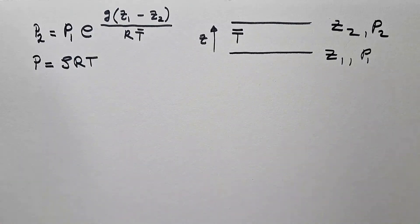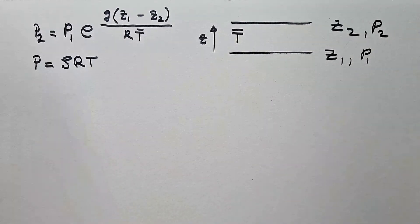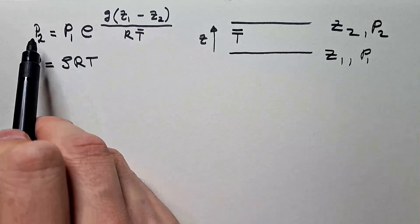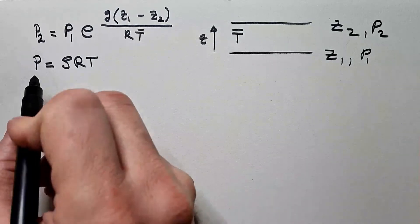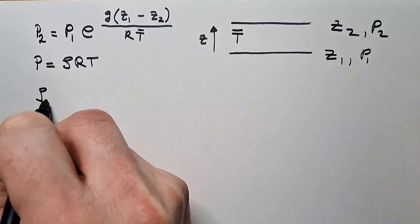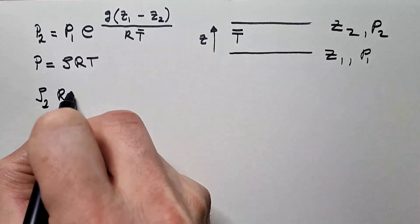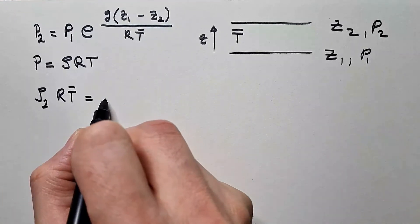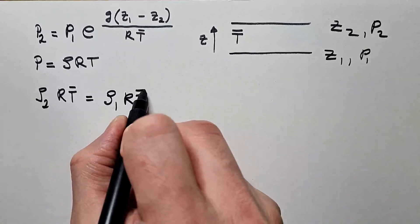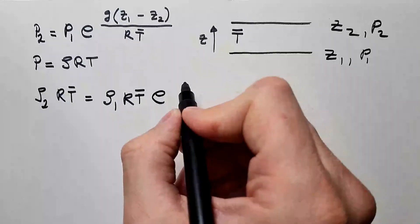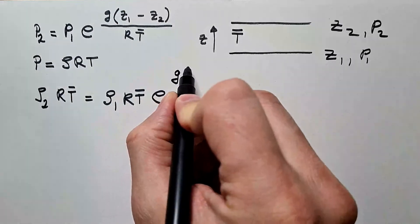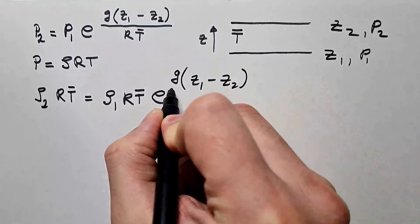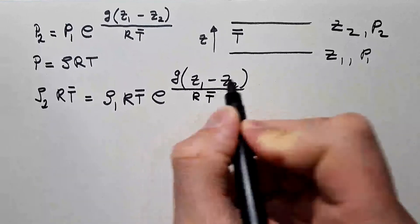However, I do believe that most of you are familiar with this expression from high school. So, using equation of state, I substitute here for P, I substitute here for P and I will get that rho 2 RT average is equal rho 1 RT average E to the G Z1 minus Z2 over RT average.